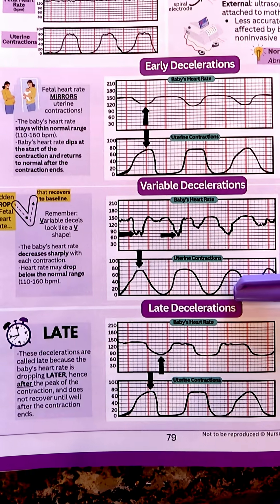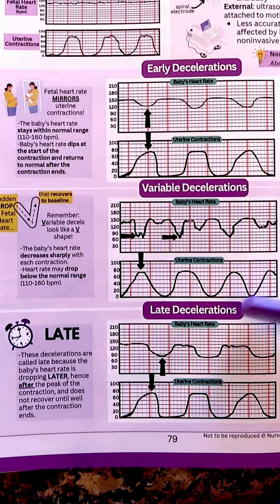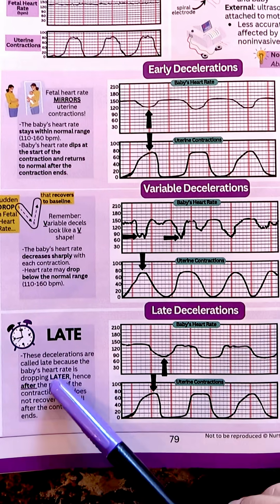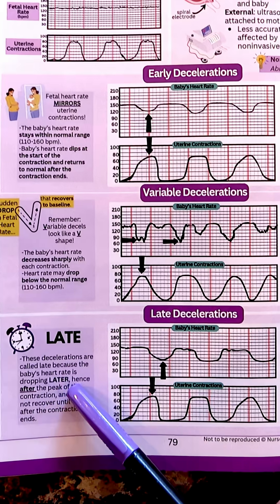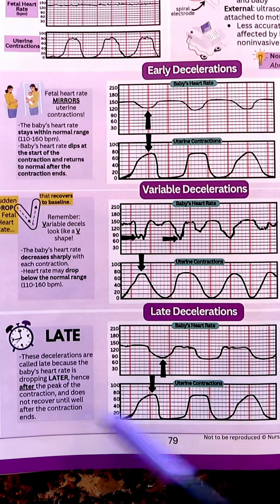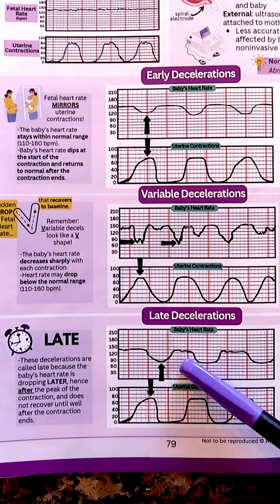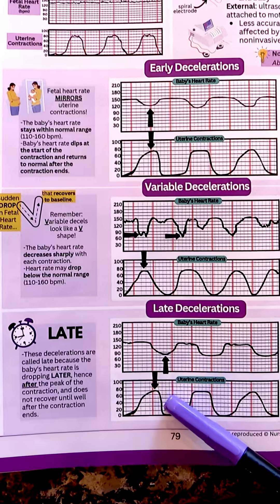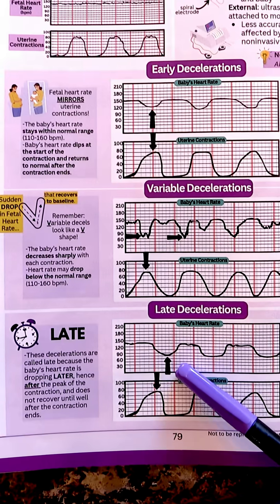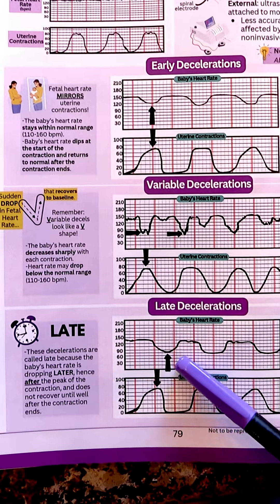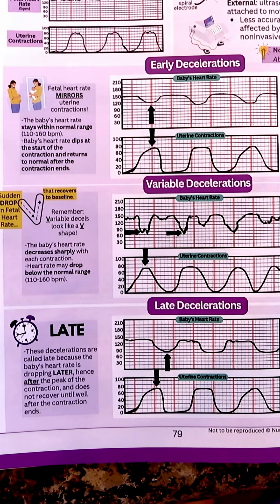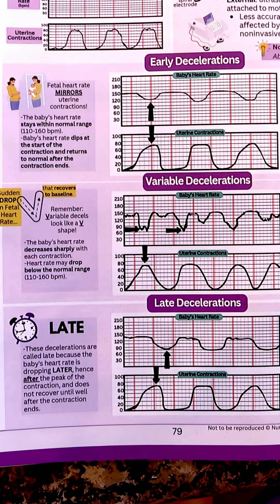Late decelerations are not normal either, and they get their name from whenever the baby's heart rate is dropping later, or after the peak of that contraction. You see the drop here — mom's contractions drop way later, and it doesn't recover until well after that contraction ends. This can be caused by uteroplacental insufficiency.